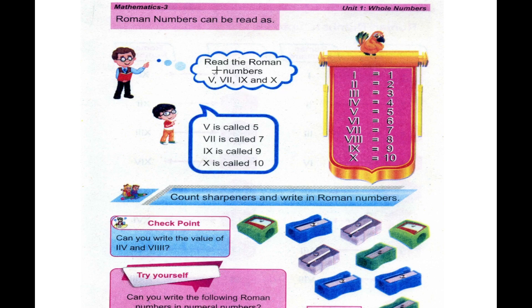There is V, I, X, X, V. V is called 5. We call VII — V double I — 7. IX is called 9. X is called 10.